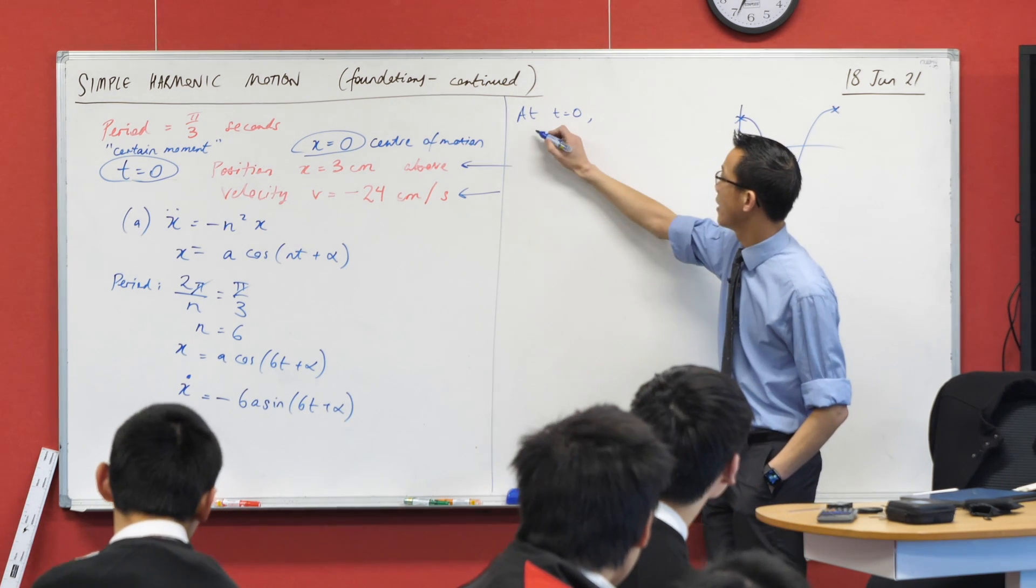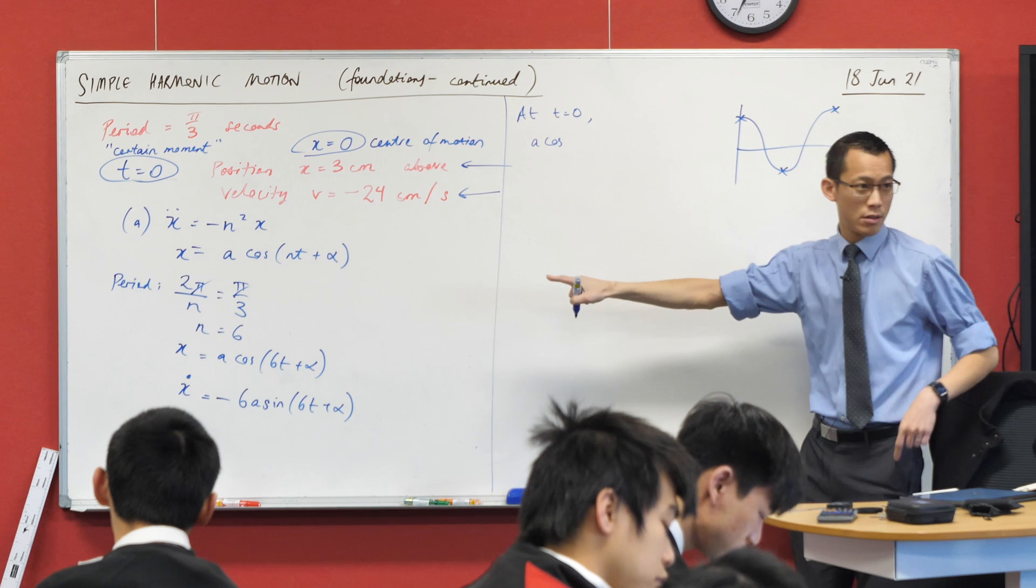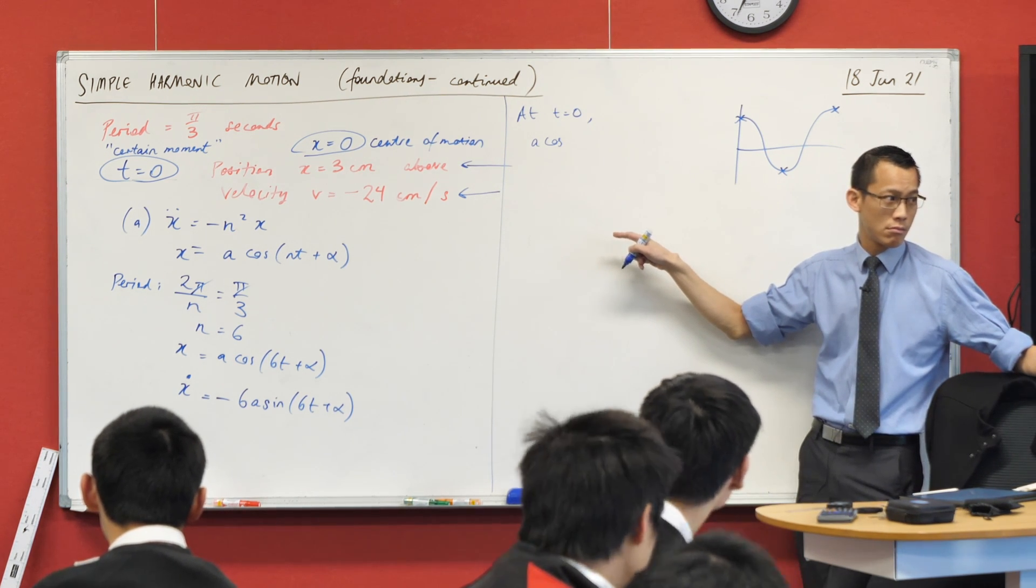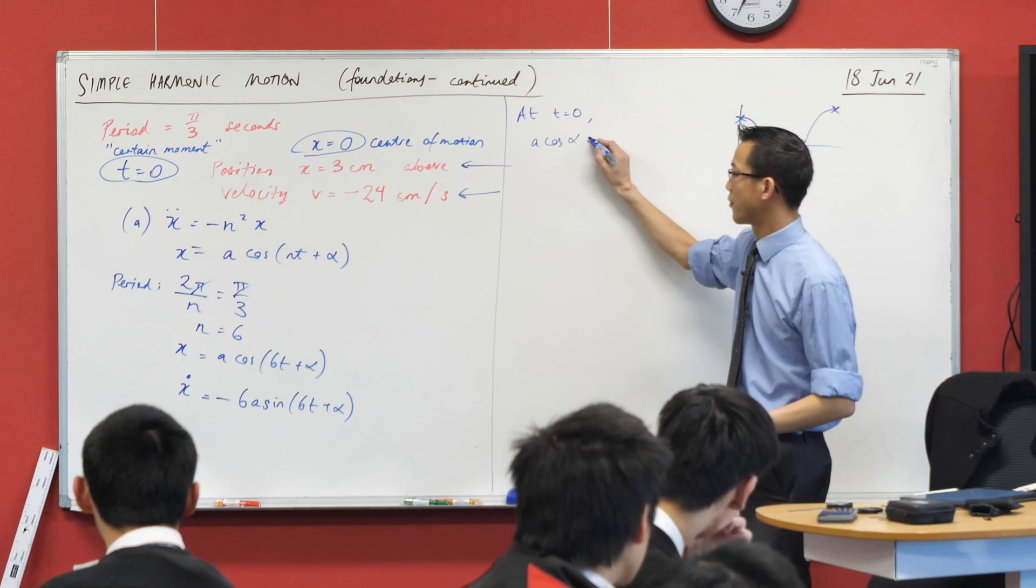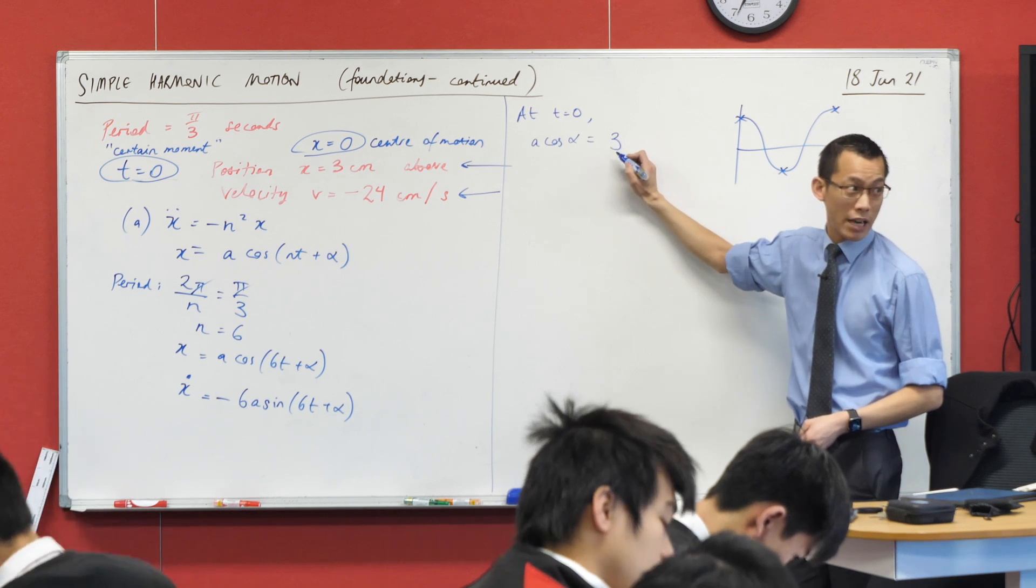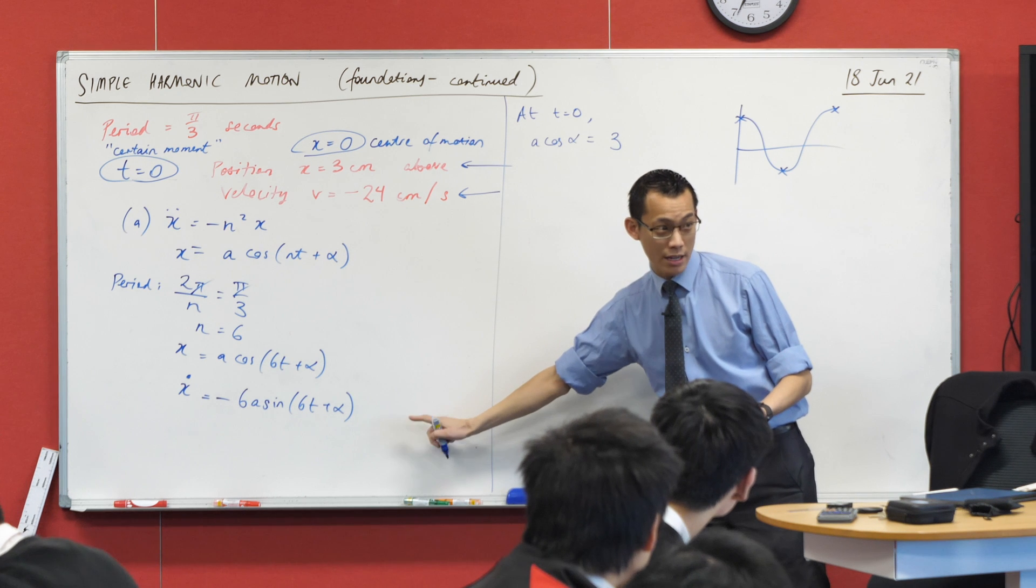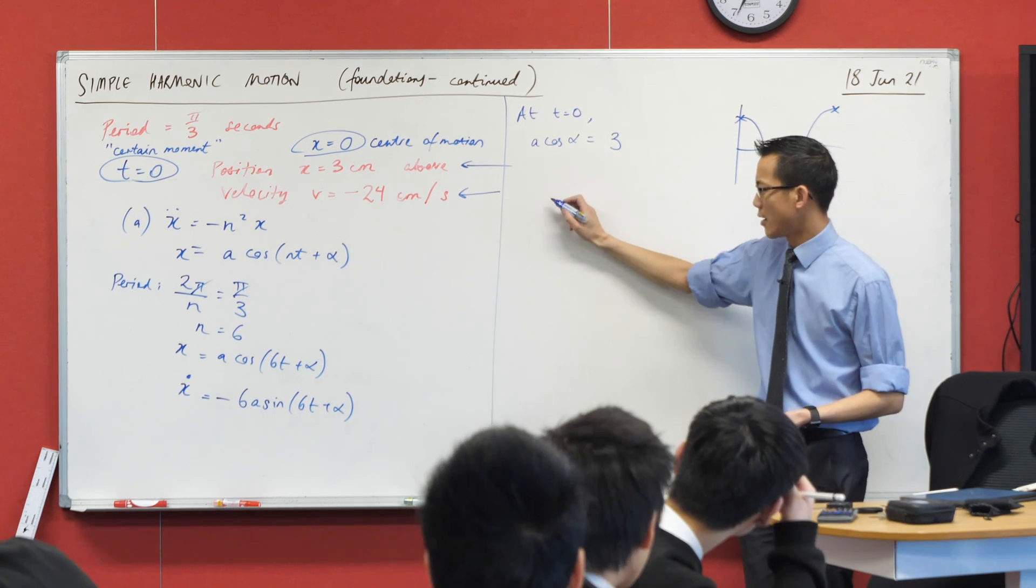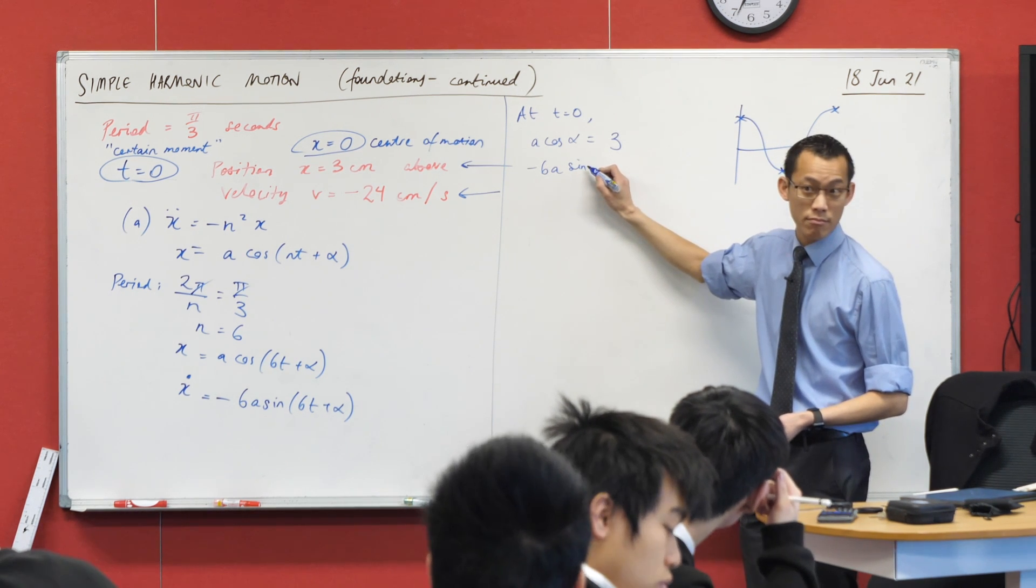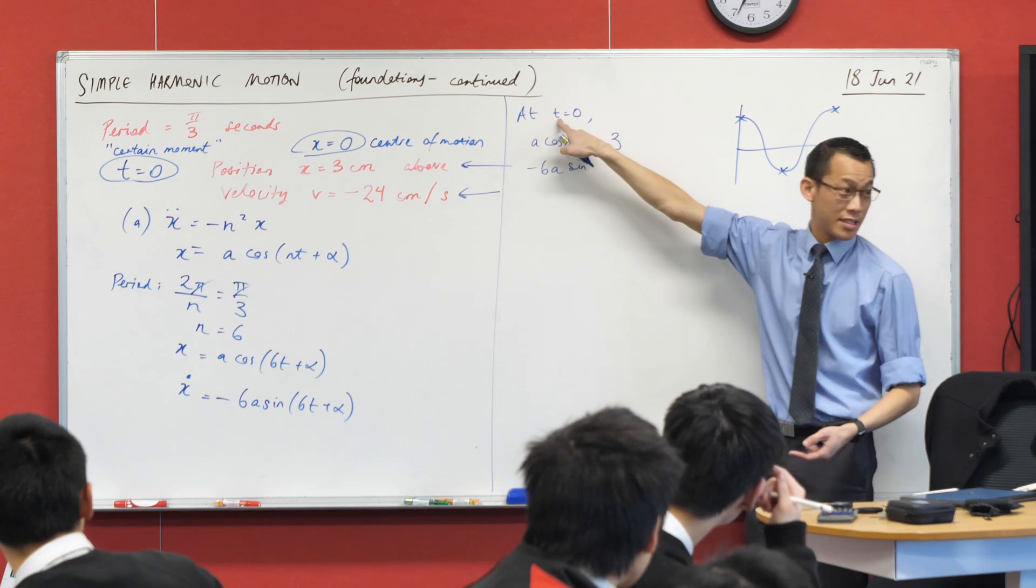So going to here I can say, let's see here, a cos of, I'm substituting t equals 0 right? So I just get a cos alpha. The 6t is gone. So a cos alpha equals, this is the displacement equation so it's 3. Are you okay with that? Similarly looking at this next equation down here, I can say negative 6 a sine of what? 6t plus alpha, but again I'm doing this t equals 0 business.